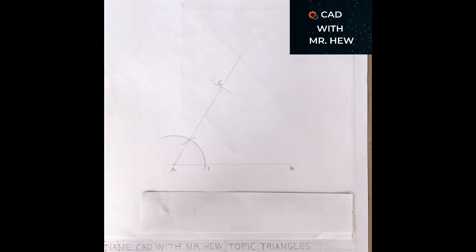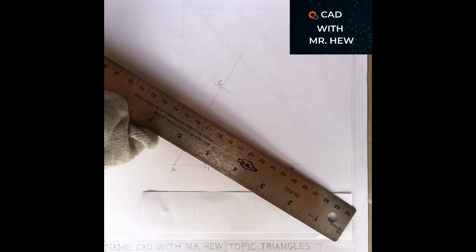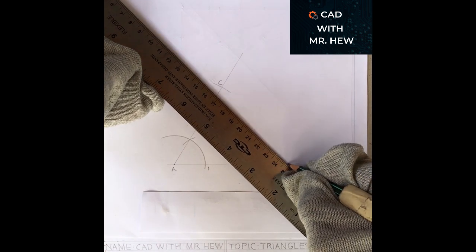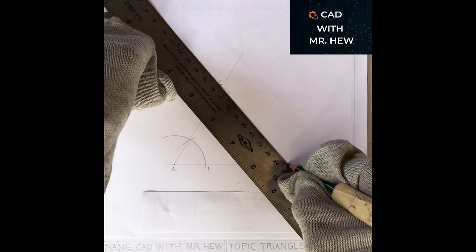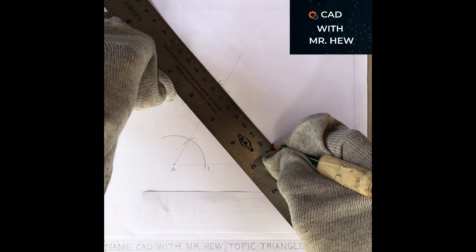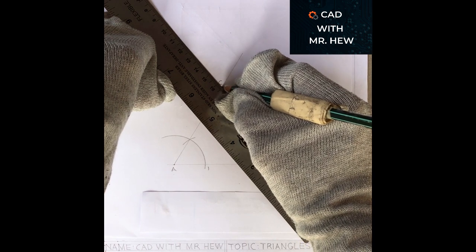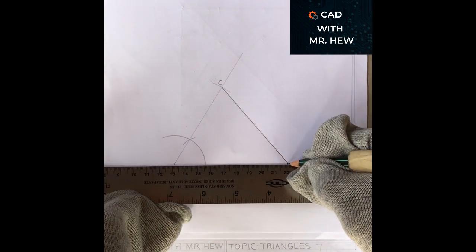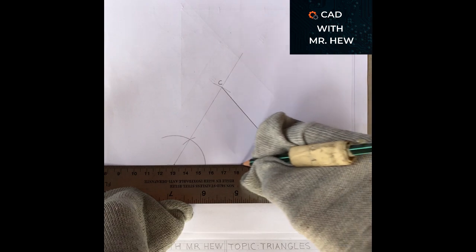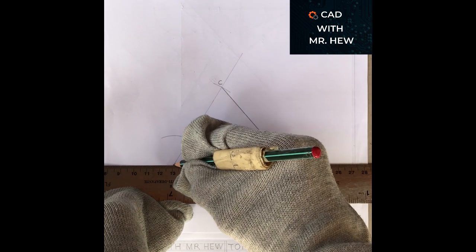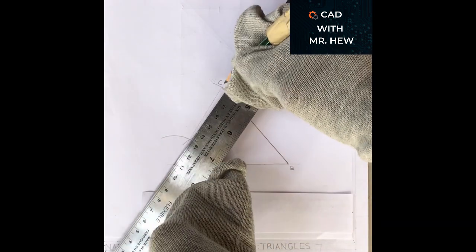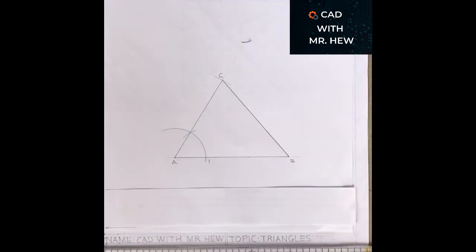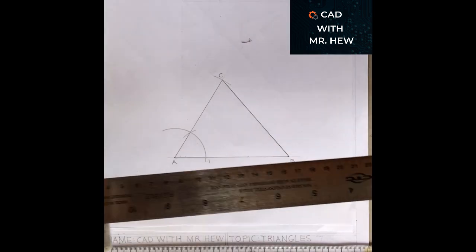Then we're going to use our ruler and pencil to draw the line BC. This is the required triangle ABC, giving the length of the base AB, angle CAB, and the length of the side AC. So we have the triangle.